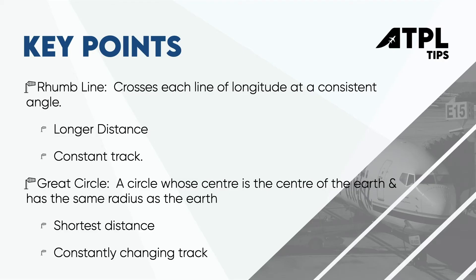To summarize: a rhumb line crosses each line of longitude at a consistent angle. They're a longer distance than a great circle route but they have a constant track. A great circle is a circle whose centre is shared with the centre of the Earth and whose radius is the same as the Earth's. Great circle tracks are the shortest possible distance between any two points on Earth, and they have a constantly changing heading. That's it — time to move on to convergency and conversion angle, which gets slightly more complicated.